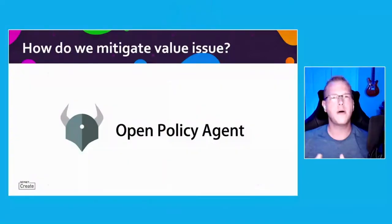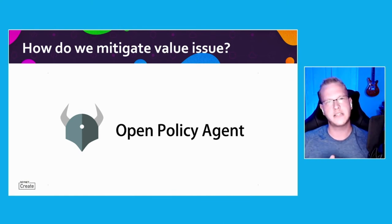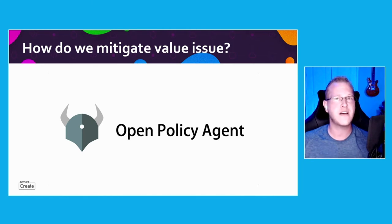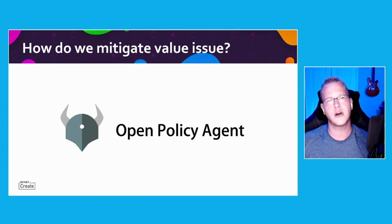How do we mitigate value issues? Open Policy Agent is a great policy-as-code framework that lets you write your own policy for security and compliance. You can say you will not allow a deployment unless it has a specific set of values, or you will not allow a blank value — so you can fail a deployment before you accidentally deploy something you're not allowed to.